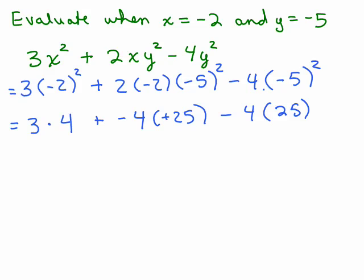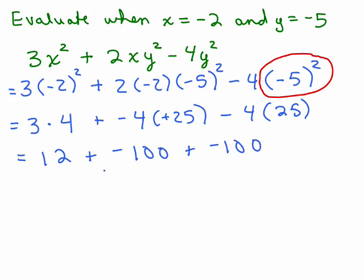Do not make the mistake of doing 4 times 5 first. The order of operations says you have to do the exponents first if you're going to write it out this way. You won't have this problem if you did it the way I did it in the first method. Okay. So let's just keep going. We're almost there, 12 plus negative 100. This is minus 100, which is also negative 100. And you can go left or right, however you want to do this.